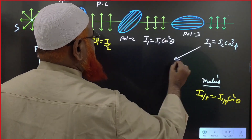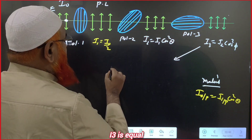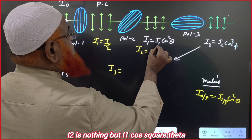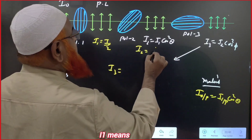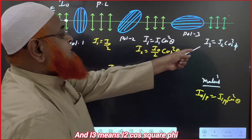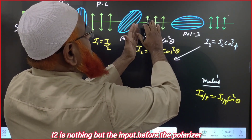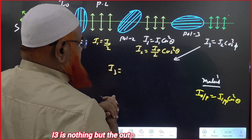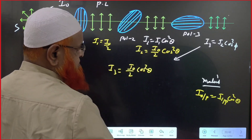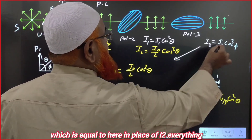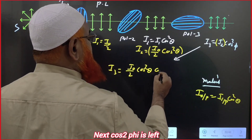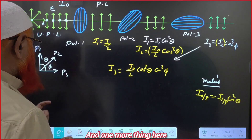Now let's substitute everything. I3 = I2·cos²φ, and I2 = I1·cos²θ, and I1 = I0/2. So I2 = (I0/2)·cos²θ. Substituting into the expression for I3: I3 = (I0/2)·cos²θ·cos²φ.